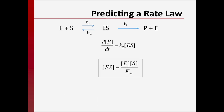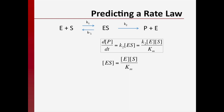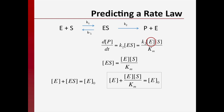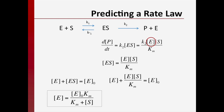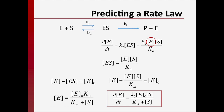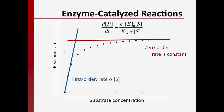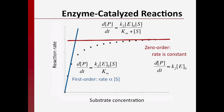Now we can use this expression to rewrite d[P]/dt. Let's eliminate the concentration of free enzyme entirely using the enzyme balance, which says that the concentration of free enzyme plus the concentration of the enzyme-substrate complex equals the initial enzyme concentration. Substituting our expression for [ES] into the enzyme balance and doing a bit of algebra, we can solve for the concentration of free enzyme. Substituting into our equation for d[P]/dt, at low substrate concentration this expression reduces to a first-order rate law, and at high substrate concentration it reduces to a zero-order rate law.